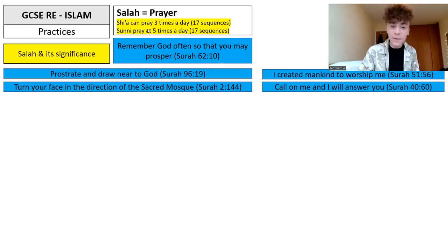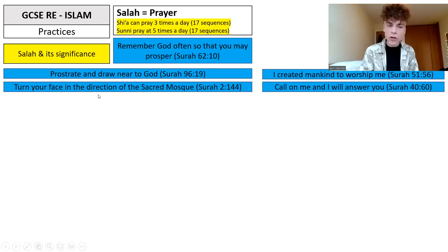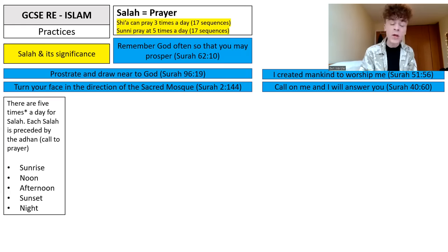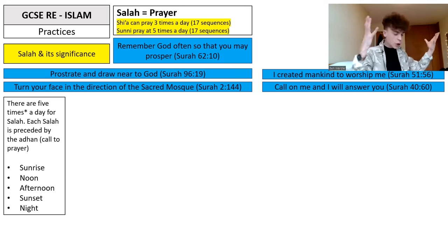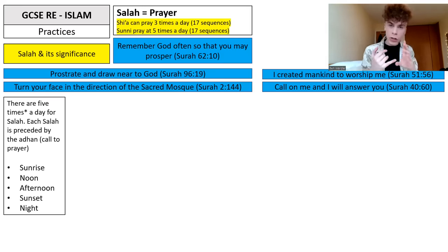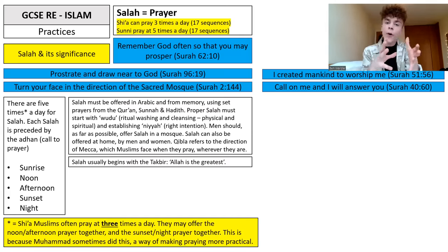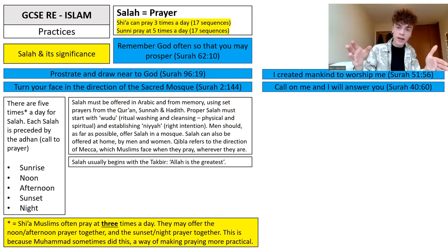Each Salah is preceded by the Adhan, the call to prayer. Shia Muslims often pray at three times a day — they may offer the noon and afternoon prayer together, and the sunset and night prayer together. So they pray at three distinct times rather than five, though performing the same total of 17 sequences. This is because Prophet Muhammad sometimes did this, and it may be seen as a way of making prayer more practical. The key point is that it is possible within Shia Islam to pray at three times a day, but you are still performing the same number of rakas.